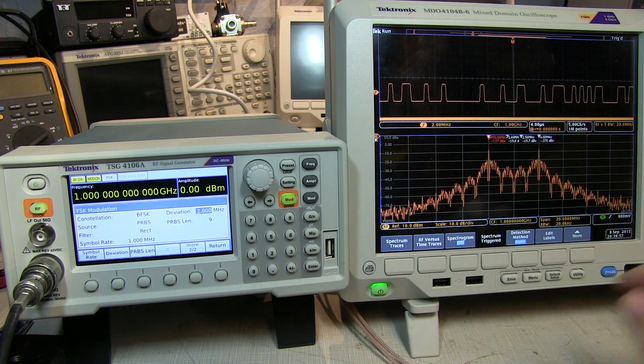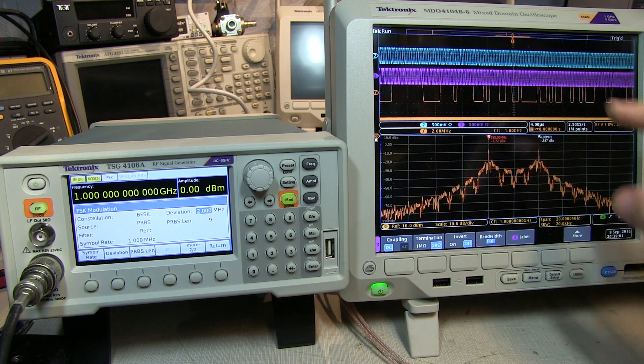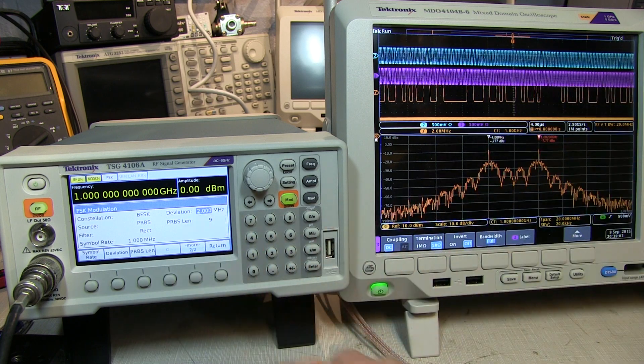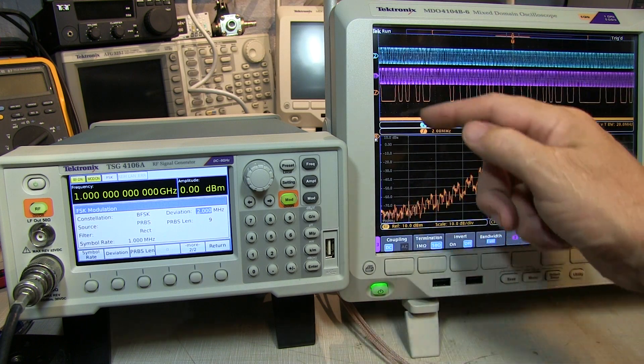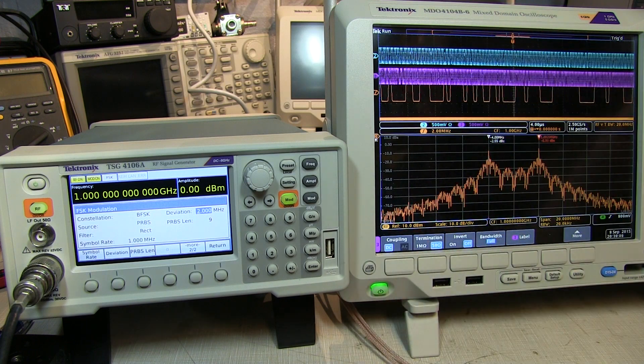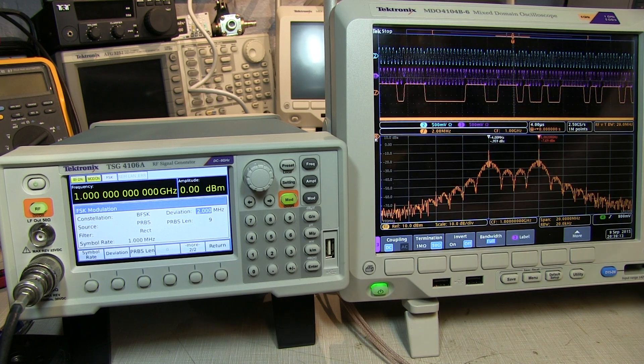Now, the vector modulation uses the I and Q, or quadrature modulation, so we can actually turn on the I and Q signals. Now, for an FSK, what will happen is we're going to have I and Q kind of running at the frequency deviation rate, or two megahertz, but the phase between them is what's going to determine whether the frequency is low or high. In fact, if we do a single shot capture, we can actually see this. Let's zoom in a little bit.